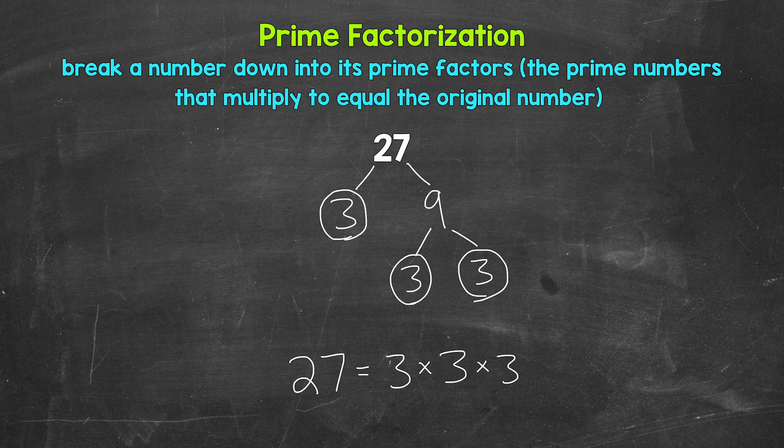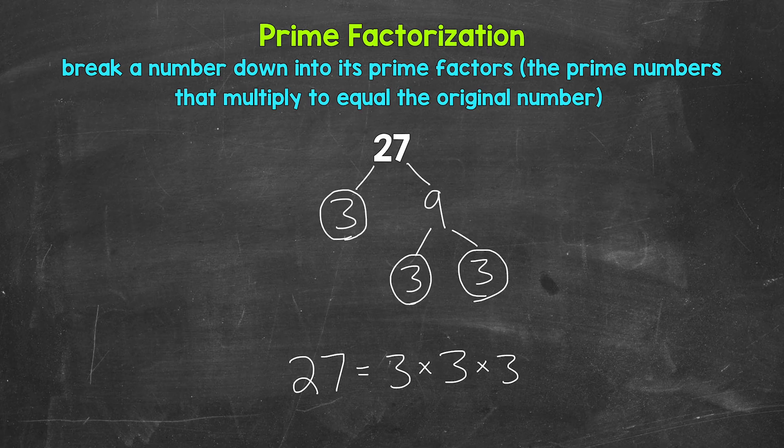If we have the correct prime numbers, they will multiply to equal our original number. Three times three is nine times three is 27. So we are correct here.